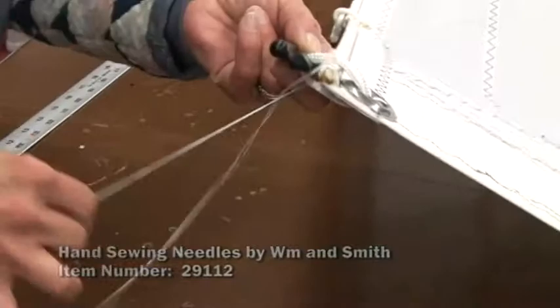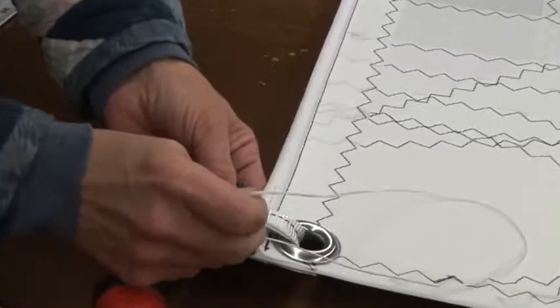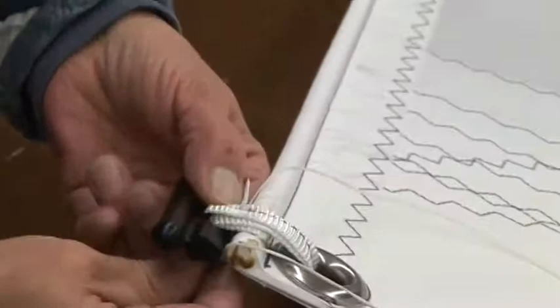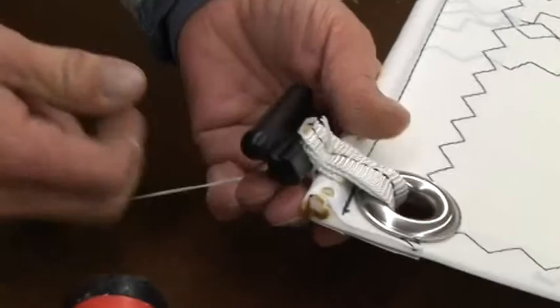Penetrate the center of the webbing with the hand needle. Pull the thread through, leaving approximately a one inch tail. Come around the webbing from one of the sides, doesn't matter which, and penetrate the center again. Tuck the tail under.